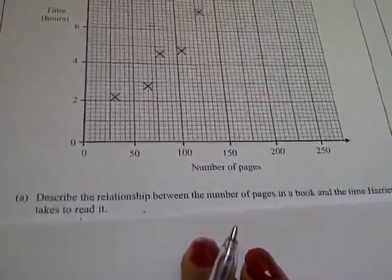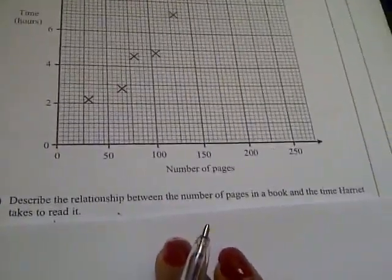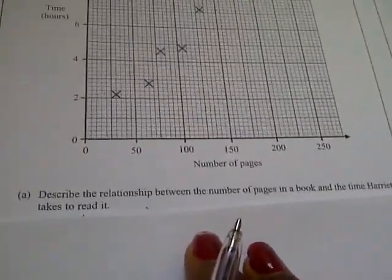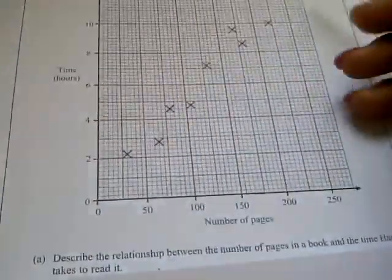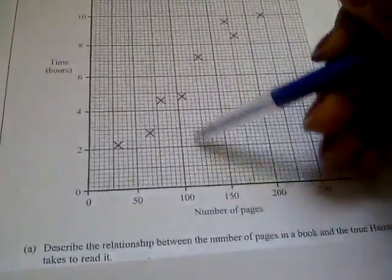Question number two says describe the relationship between the number of pages in a book and the time Harriet takes to read it. From the graph you find out that as the time increases, the number of pages increases.